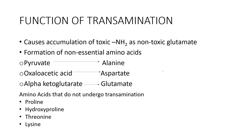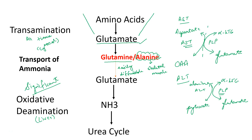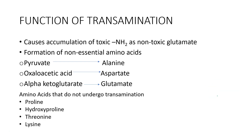Functions of transamination: the main function is that it causes the accumulation of the toxic amino group as non-toxic glutamate. It is also required for formation of non-essential amino acids from the respective keto acids — since it is a reversible reaction, oxaloacetic acid can form aspartate, pyruvate can form alanine, and alpha-ketoglutarate is used for synthesis of glutamate. The amino acids that do not undergo transamination are proline, hydroxyproline, threonine, and lysine.